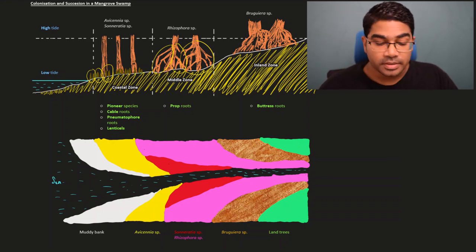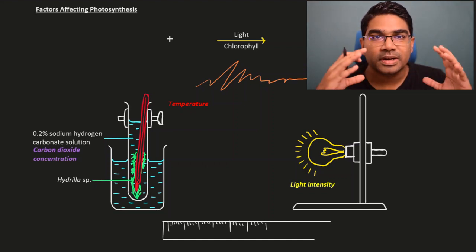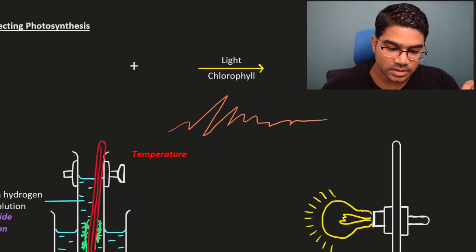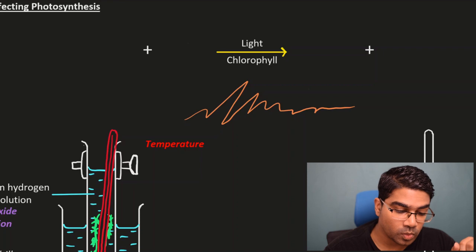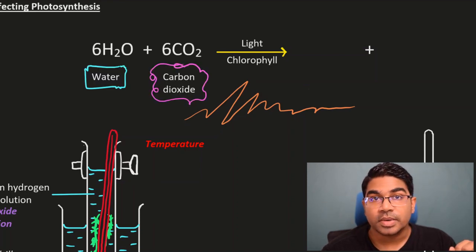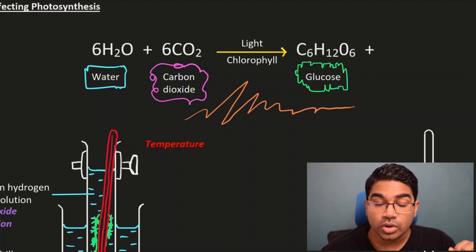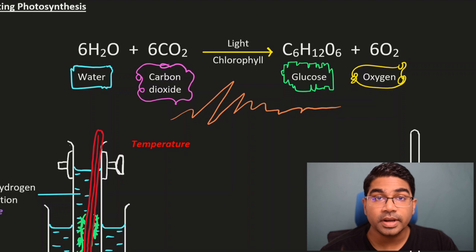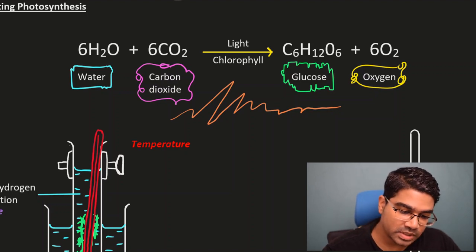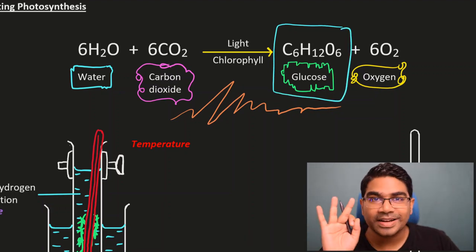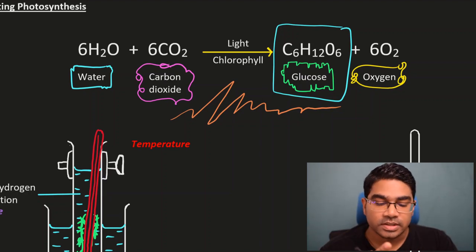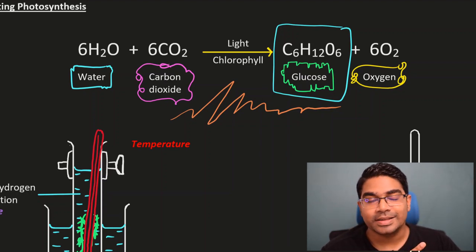Now let's look at photosynthesis — specifically the factors affecting photosynthesis and the experimental setup to determine how these factors affect the rate of photosynthesis. Photosynthesis is when water and carbon dioxide, in the presence of light and chlorophyll, produce glucose and oxygen. There are three main factors that affect the rate of photosynthesis: temperature, carbon dioxide concentration, and light intensity.